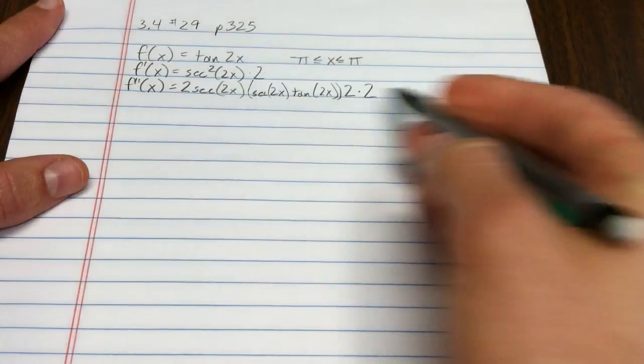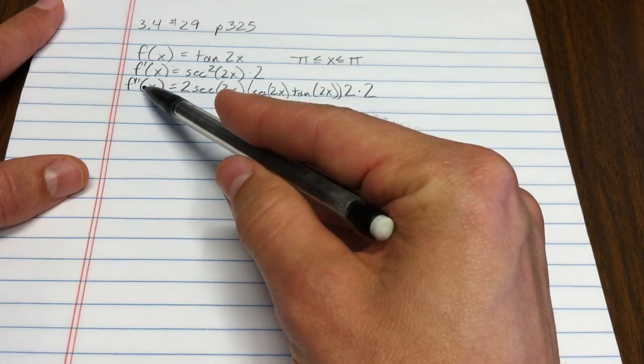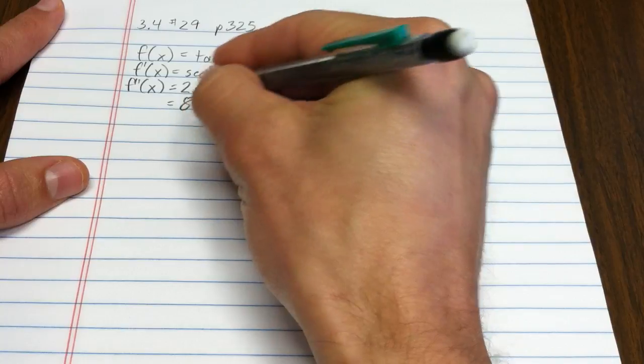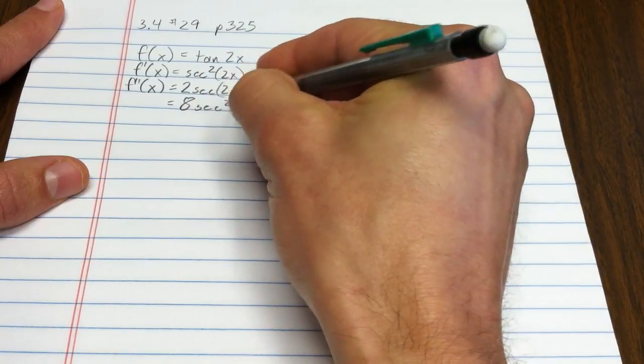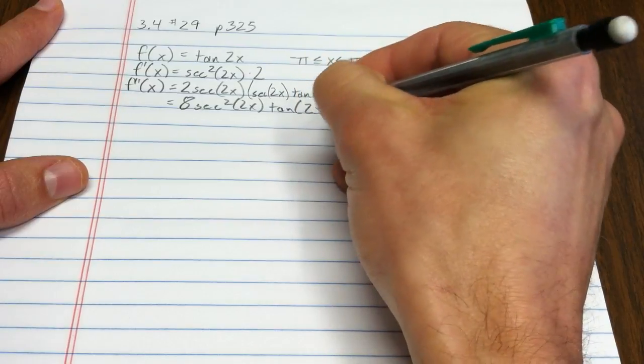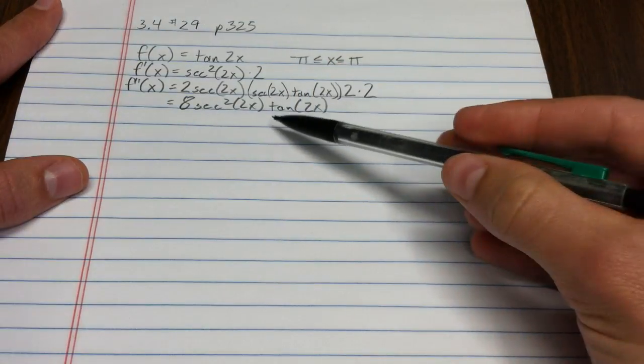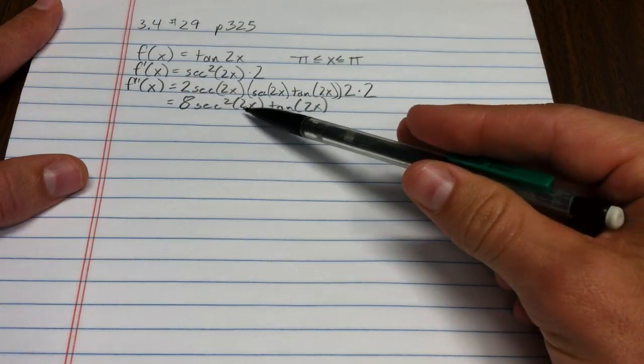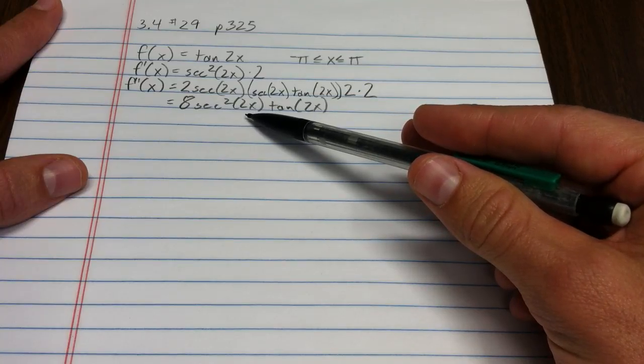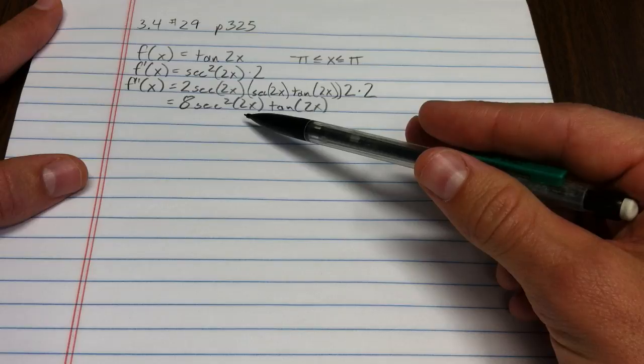Okay, all those 2's don't matter a whole heck of a lot because I'm asking the question, where is this derivative that we could write as 8 secant squared 2x tan 2x? I can ask the question, where is that equal to 0 or where is that undefined?